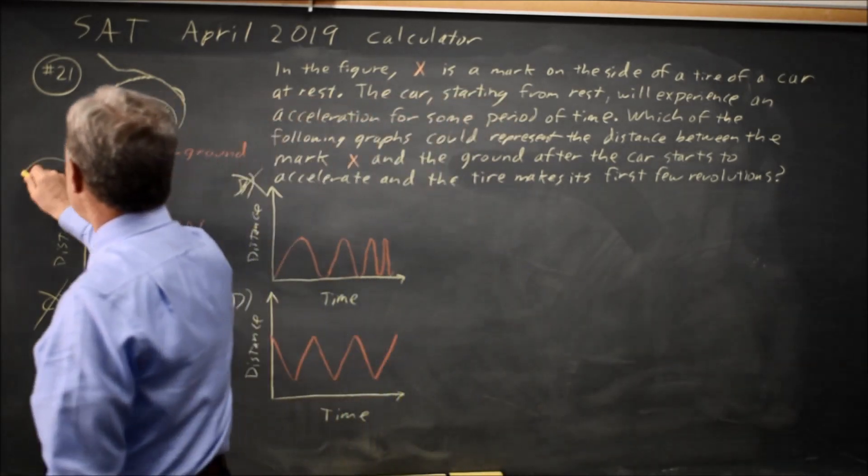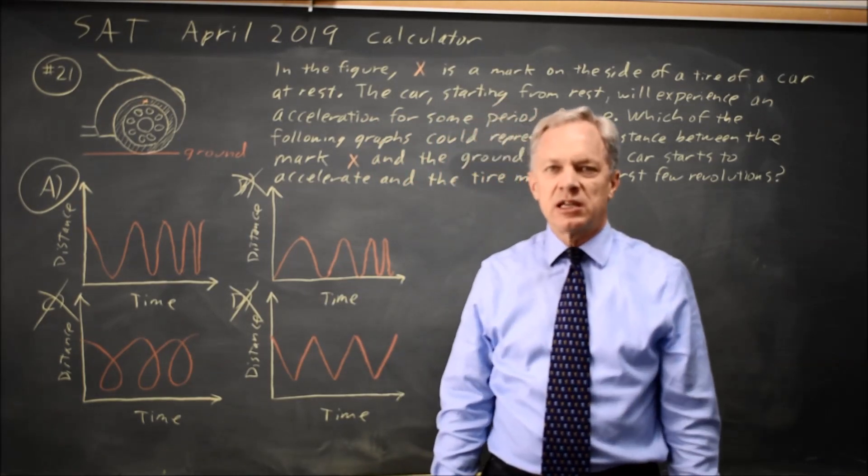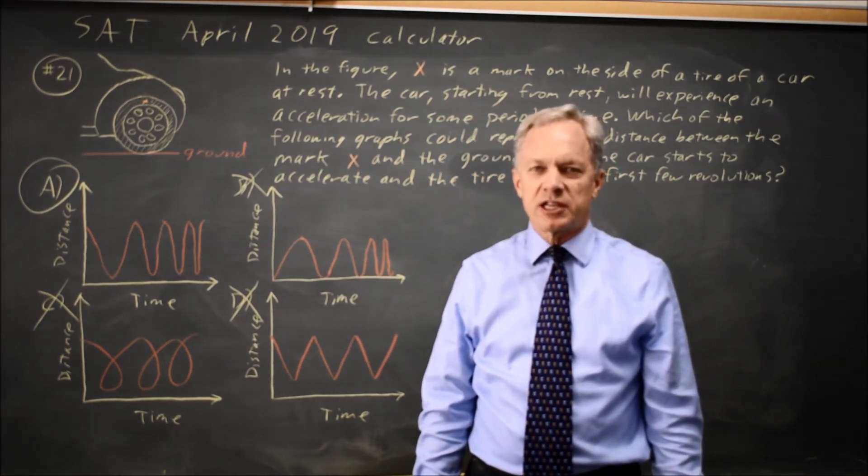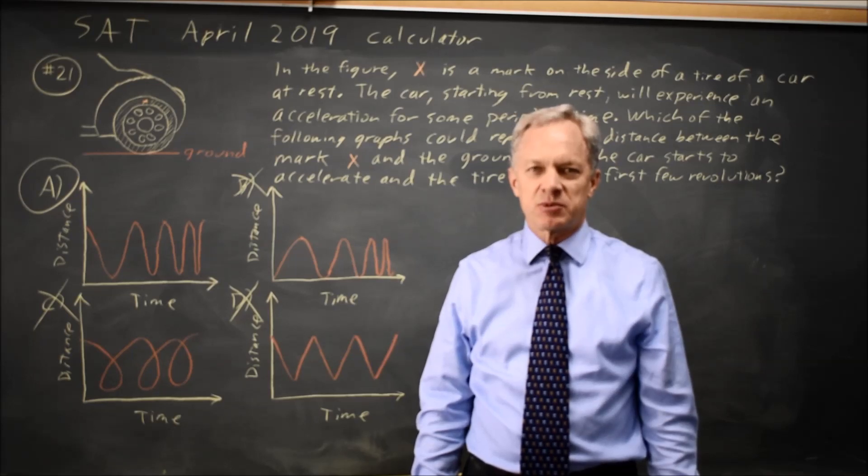So we would expect A and not D. The mark will not zigzag. If you watch a bicycle with a reflector or visualize a bicycle with a reflector, you may be able to visualize what this looks like.